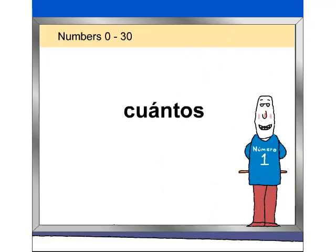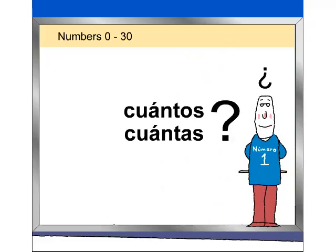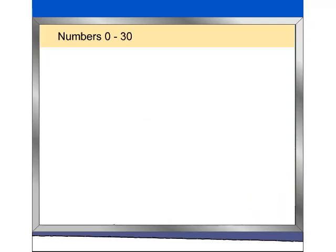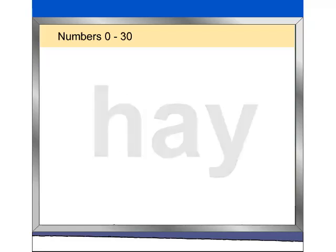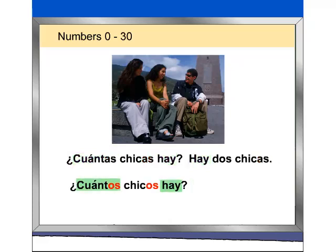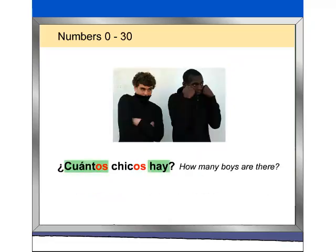Now that you know the números cero a treinta, you need to learn how to ask 'how many' in Spanish. Use cuántos with masculine nouns and cuántas with feminine nouns. Use the Spanish word hay to say 'there is' or 'there are.' ¿Cuántas chicas hay? Hay dos chicas. ¿Cuántos chicos hay? Hay un chico. ¿Cuántos chicos hay? Hay dos chicos.